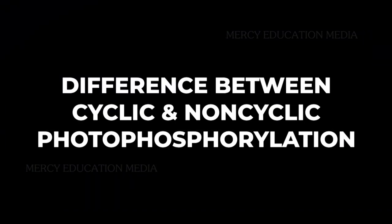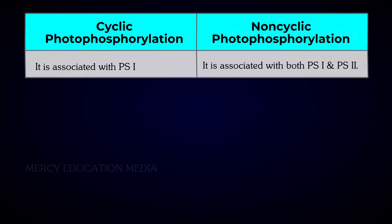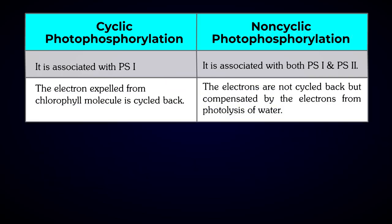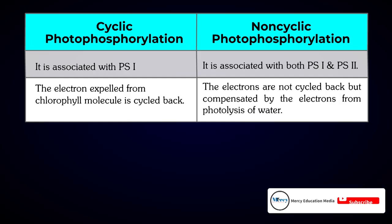Let us know the differences between cyclic and non-cyclic photophosphorylation. Cyclic photophosphorylation is associated with PS1 only, whereas non-cyclic photophosphorylation is associated with both PS1 and PS2. In cyclic photophosphorylation, the electron expelled from the chlorophyll molecule is cycled back, while in non-cyclic photophosphorylation, the electrons are not cycled back but are compensated by electrons from the photolysis of water.